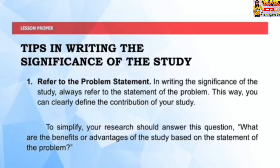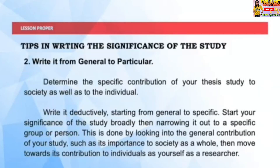To simplify, your research should answer this question: What are the benefits or advantages of the study based on the statement of the problem? Write it from general to particular — determine the specific contribution of your thesis study to society as well as to the individual. Write it deductively, starting from general to specific. Start your significance of the study broadly, then narrow it out to a specific group or person. This is done by looking into the general contribution of your study, such as its importance to society as a whole, then move towards its contribution to individuals such as yourself as a researcher.